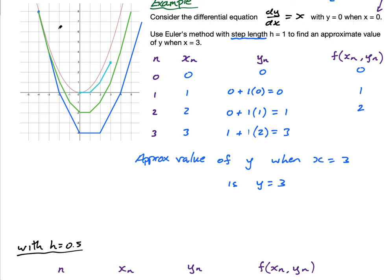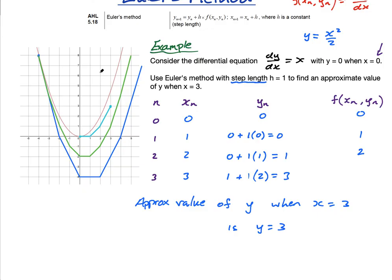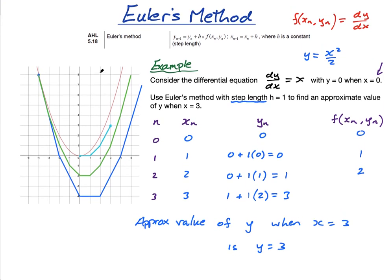One final thing to note: when the curve is concave up, you can see what's happening — because you're following the gradient of the curve, the approximation will always be less than the actual real value. However, if the curve is concave down, the opposite effect happens — your approximation is actually higher than the real value.